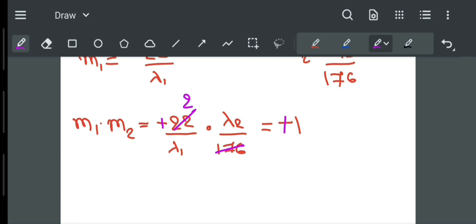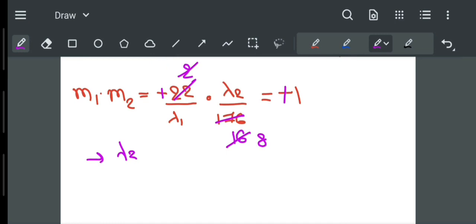11 times 2 is 22, 11 times 16 is 176, which implies that lambda 2 divided by lambda 1 equals 8.